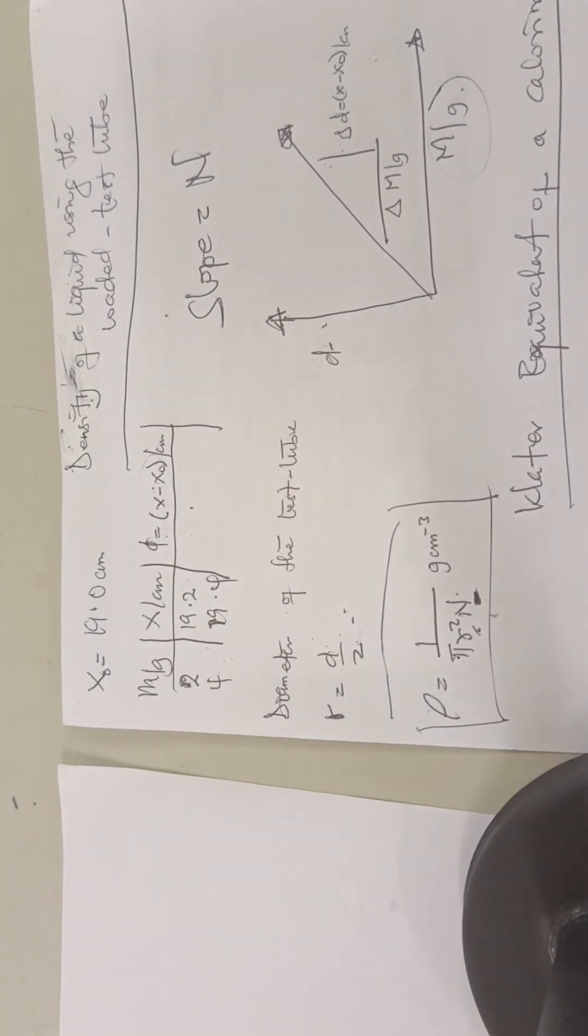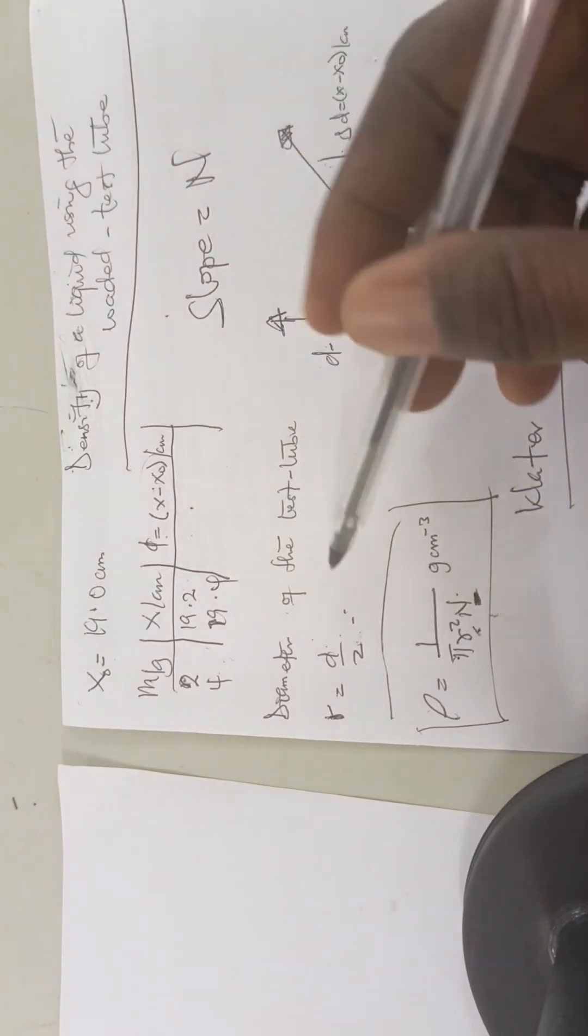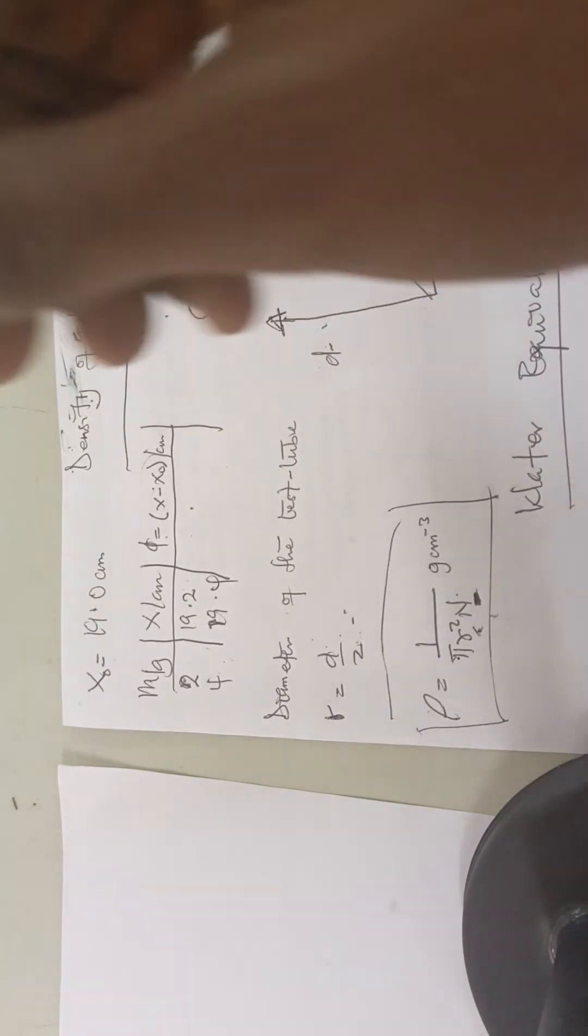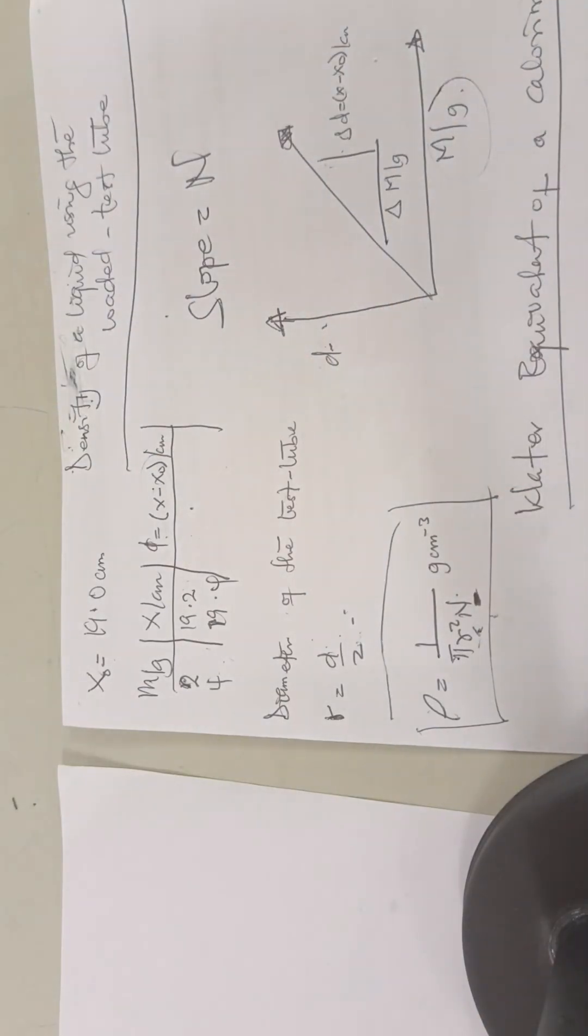So it's a very simple method for finding density. Once we get our slope, we put it in the formula, then we put the radius of the test tube here, and it will give us our density. This is a very simple method of finding the density of a liquid—it can be any liquid at all.